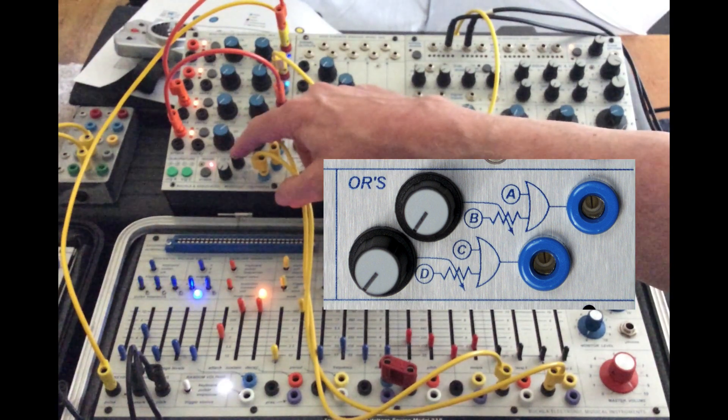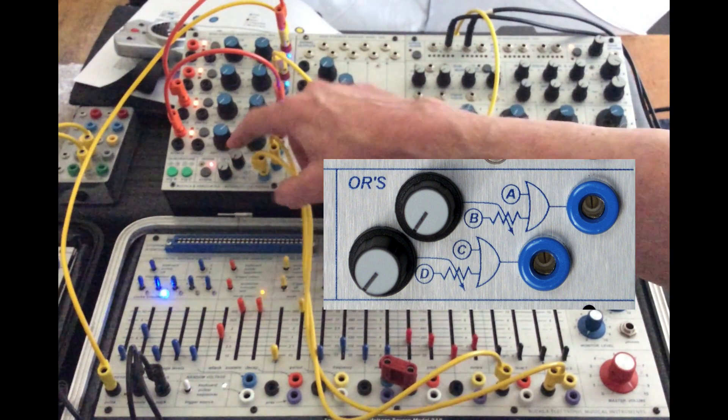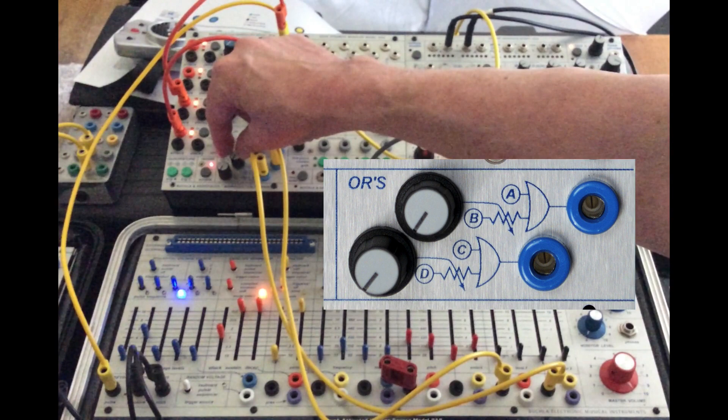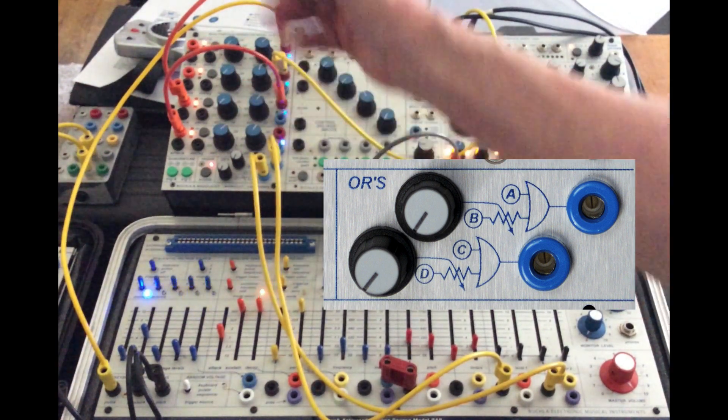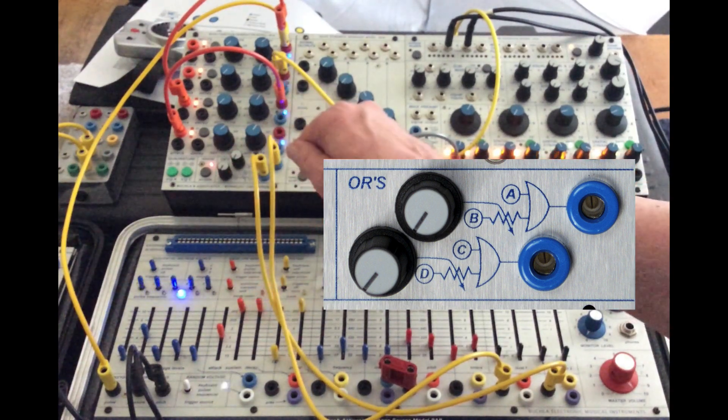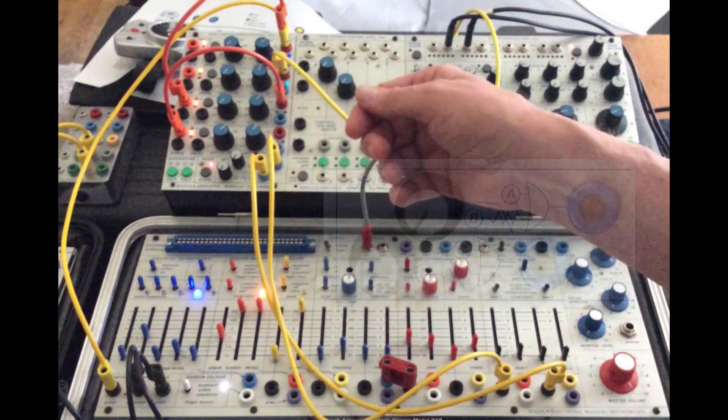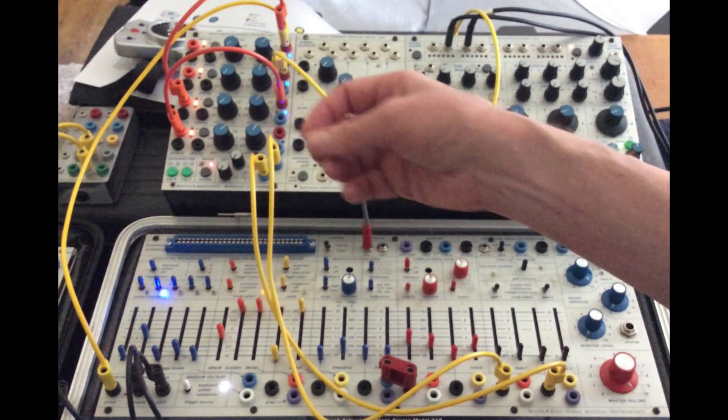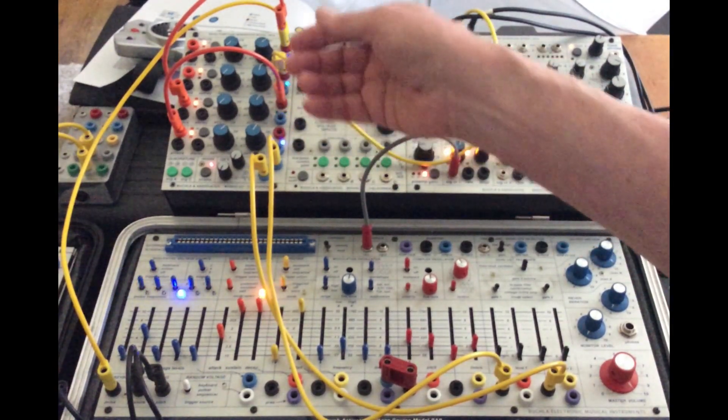The top knob is from A with it all the way to the left, and then as you move towards the right it adds in B. And the bottom one does the same for C to D. So you can get some interesting blended CV envelopes.